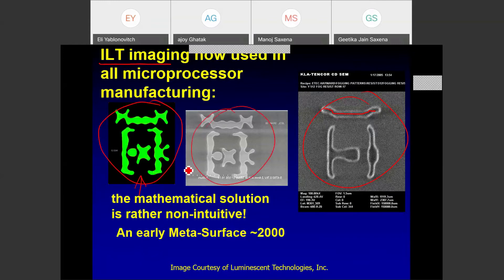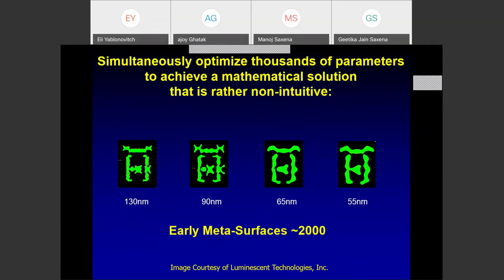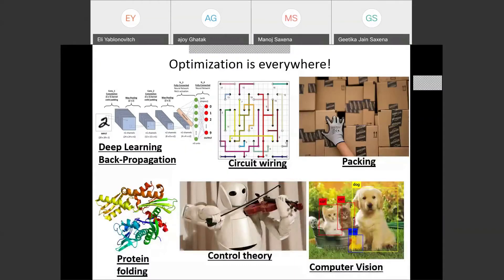This is utterly non-intuitive and could be regarded as an early example of an optimized meta-surface. The solutions change depending on which generation of technology you are using — these are early examples of optimized meta-surfaces. The main point is that the result is non-intuitive and you simply have to use mathematics to arrive at these shapes. Optimization is an overwhelming part of everything we do in science and human effort.